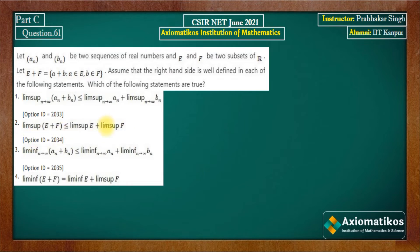That is why the second and fourth parts cannot be attempted at all. The remaining ones are first and third. The question also says the right-hand side is well defined in each statement, meaning the values are not becoming infinite. So whenever LIMSUP is written directly like this, it means infinity is not arising. We will write one result to help solve this question.